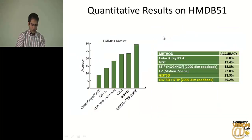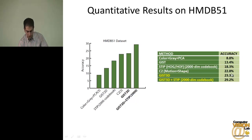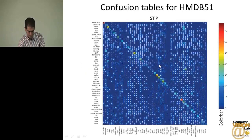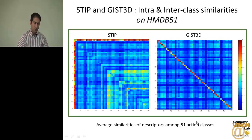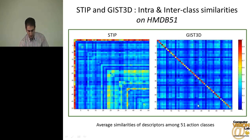On HMDB51, STIP had 18.3% accuracy, our descriptor had 23.3% accuracy, and the combined classifier had 29% accuracy. We also computed the average descriptor similarities on HMDB51 and observed the same result: higher intraclass similarity and lower interclass similarity.